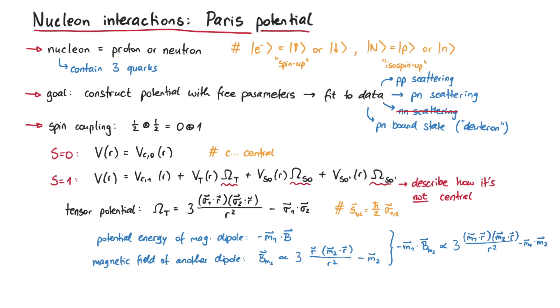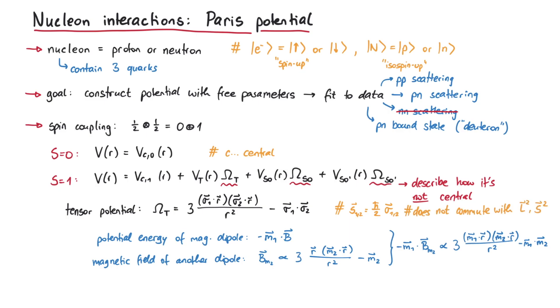Another important point is that this tensor potential is the only term in the Hamiltonian that does not commute with the operators L-square or S-square, which means that the orbital angular momentum and the spin of the nucleons are not good quantum numbers anymore.